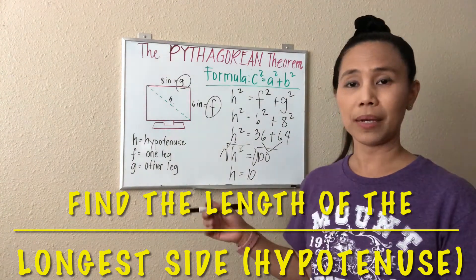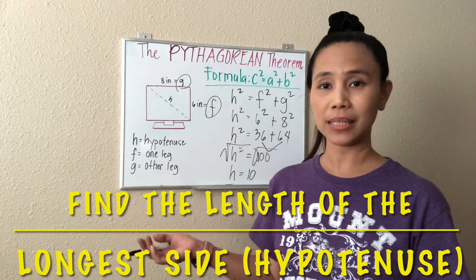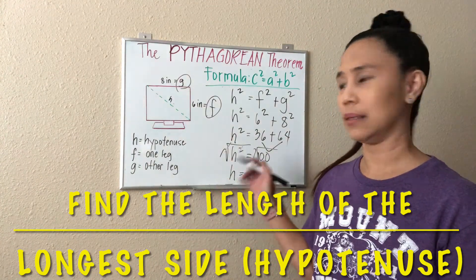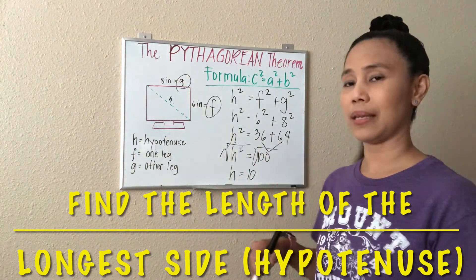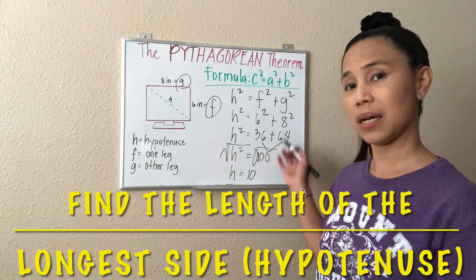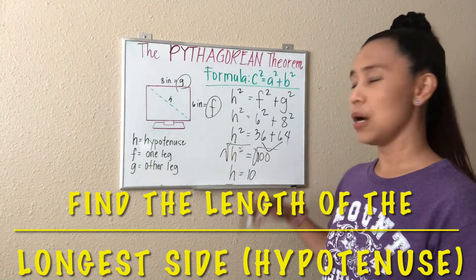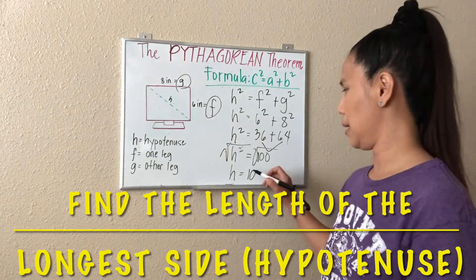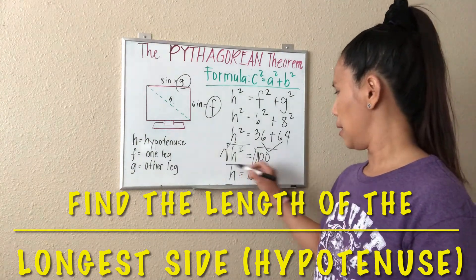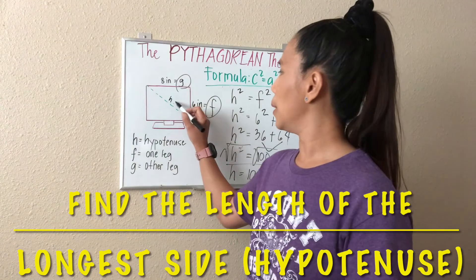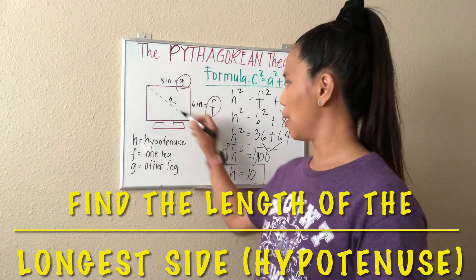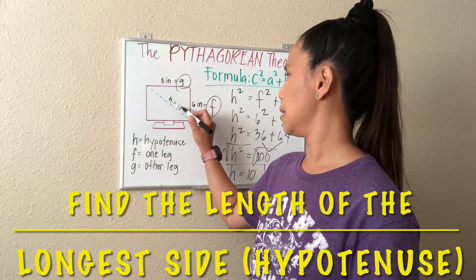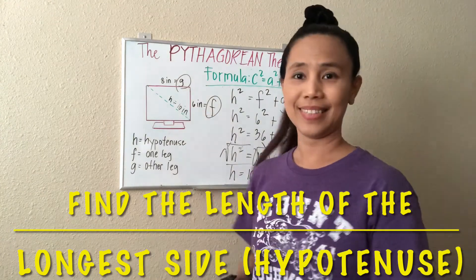We have to eliminate the exponent by putting the square root. The square root of H squared would be H. We can just cancel this out, and we have H, and the square root of 100 is 10. Think of a number that if you multiply by itself will give you that number — 10 times 10 is 100. So the square root of 100 is 10, and that's how you do it when you don't have a calculator. We now know that the length of this is equal to 10 inches.